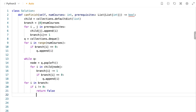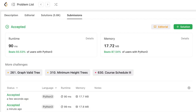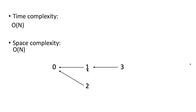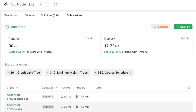Otherwise, we return true. The solution got accepted. The time complexity of this approach is O(n) because we traverse through each node at most twice. The space complexity is also O(n) because we create a dictionary and two lists whose sizes depend on the number of prerequisites. I hope you liked this video, I'll see you in the next one. Thank you.